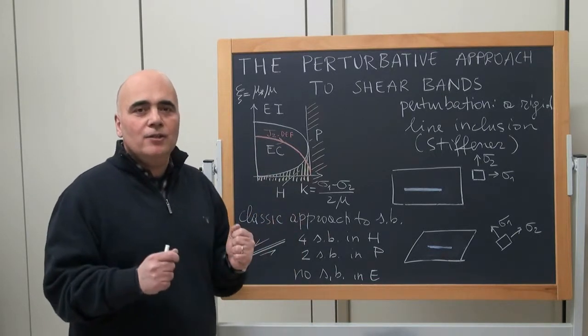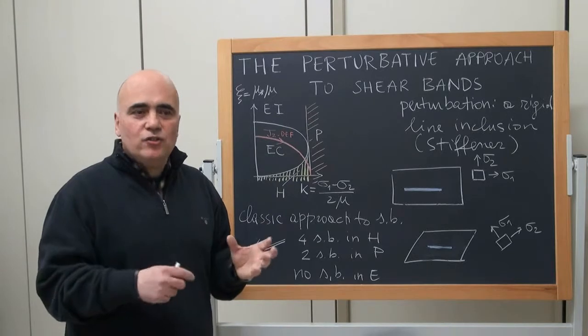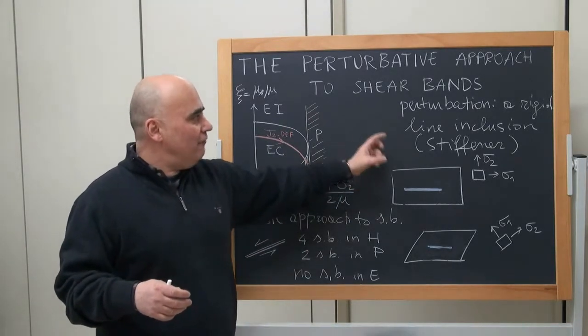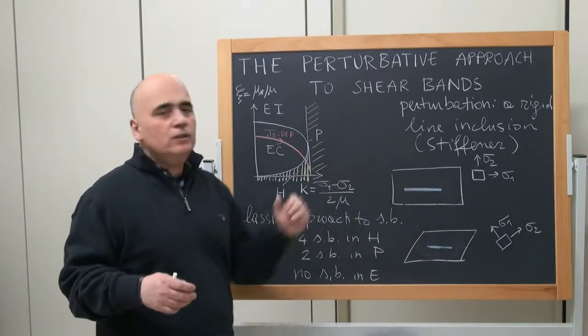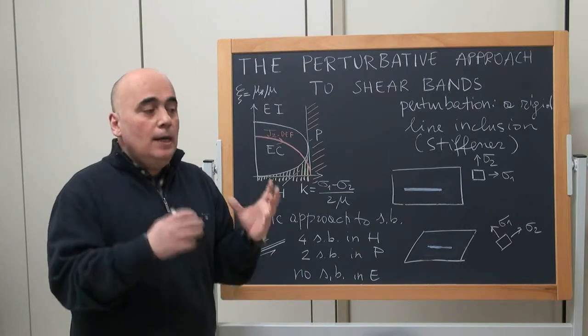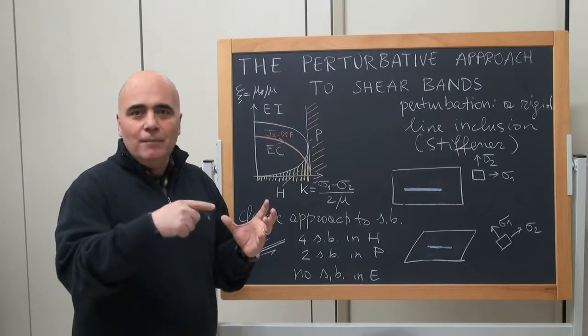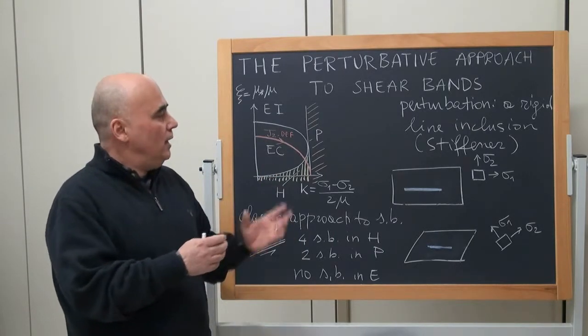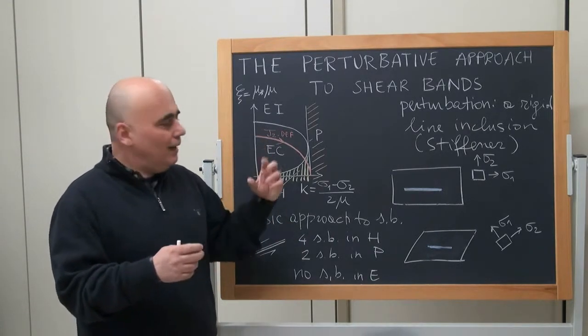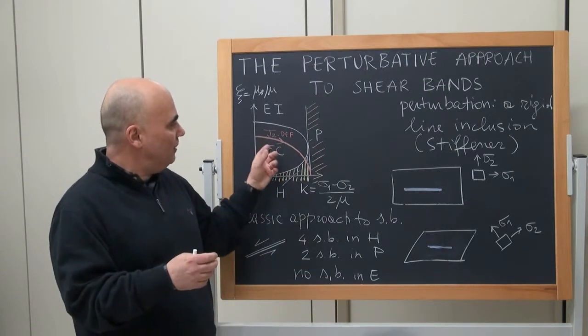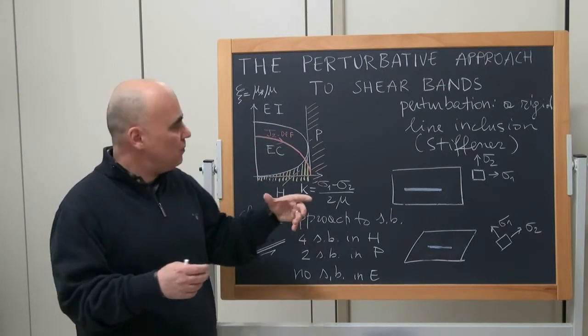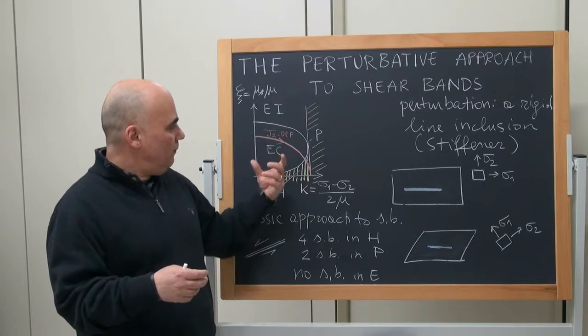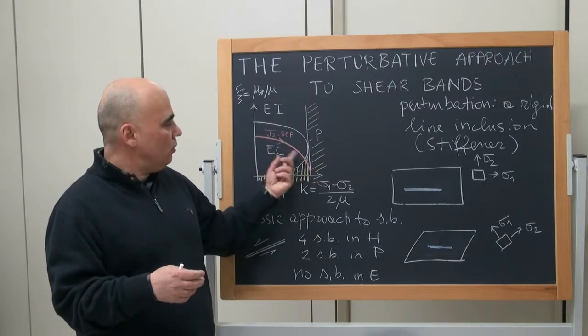At different levels of pre-stress the material is perturbed, for instance adding a concentrated force or analyzing the effect of rigid line inclusion, a so-called stiffener or imposing a fracture and plotting the mechanical fields, the incremental stress, the incremental displacement or incremental deformation. And the behavior of the material changes the incremental response in a way that usually shear bands emerge near the border of ellipticity loss.